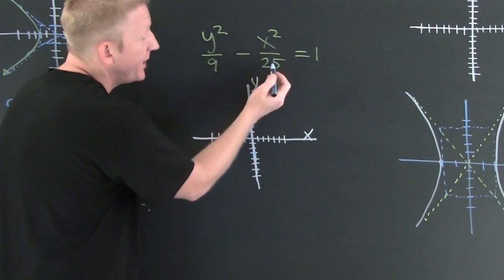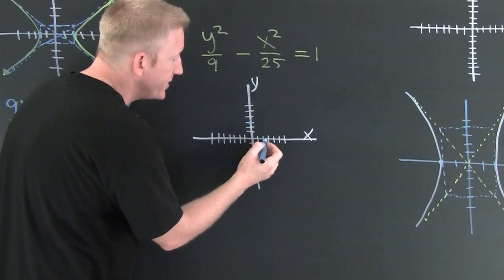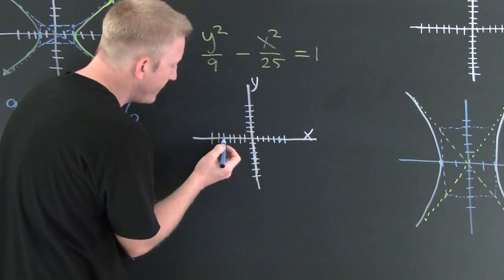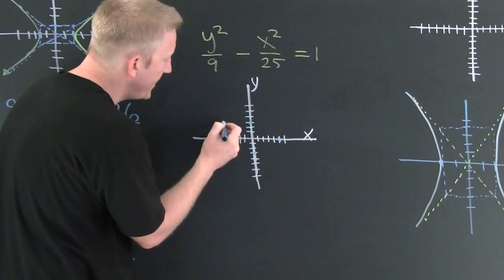Under X I have 25: one, two, three, four, five; one, two, three, four, five.